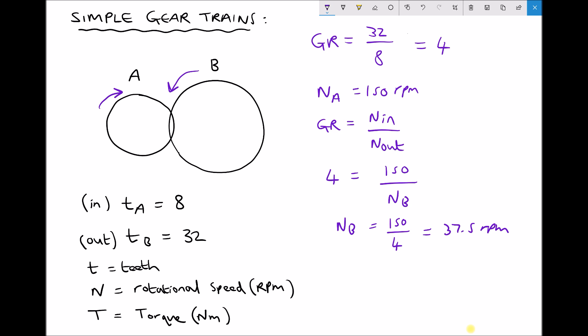So as we would expect, the rotational speed of gear A is 4 times the rotational speed of gear B because we have a gear ratio of 4.